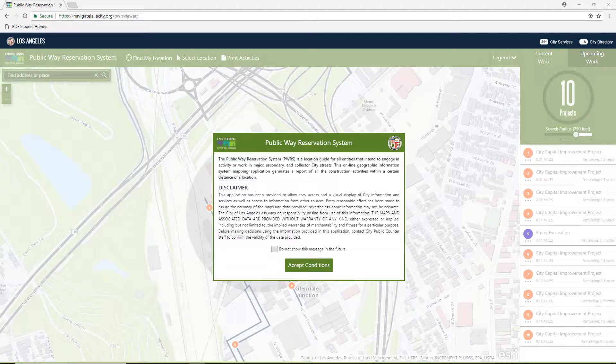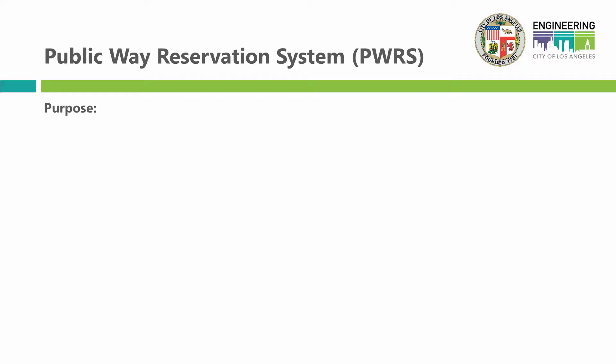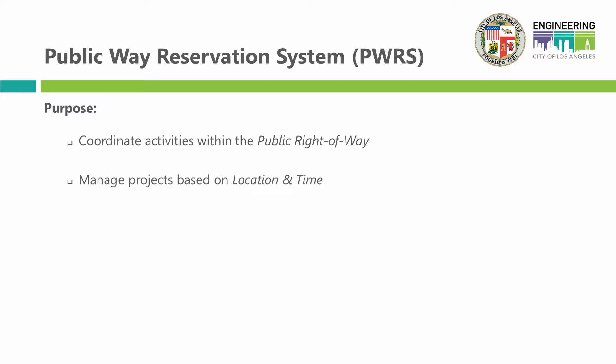Hi, welcome to the City of Los Angeles Bureau of Engineering's Public Way Reservation System, or POWERS for short. The purpose of the Public Way Reservation System is to coordinate all activities within the public right-of-way in the City of Los Angeles. Basically, it's a planning tool to manage projects based on location and time.